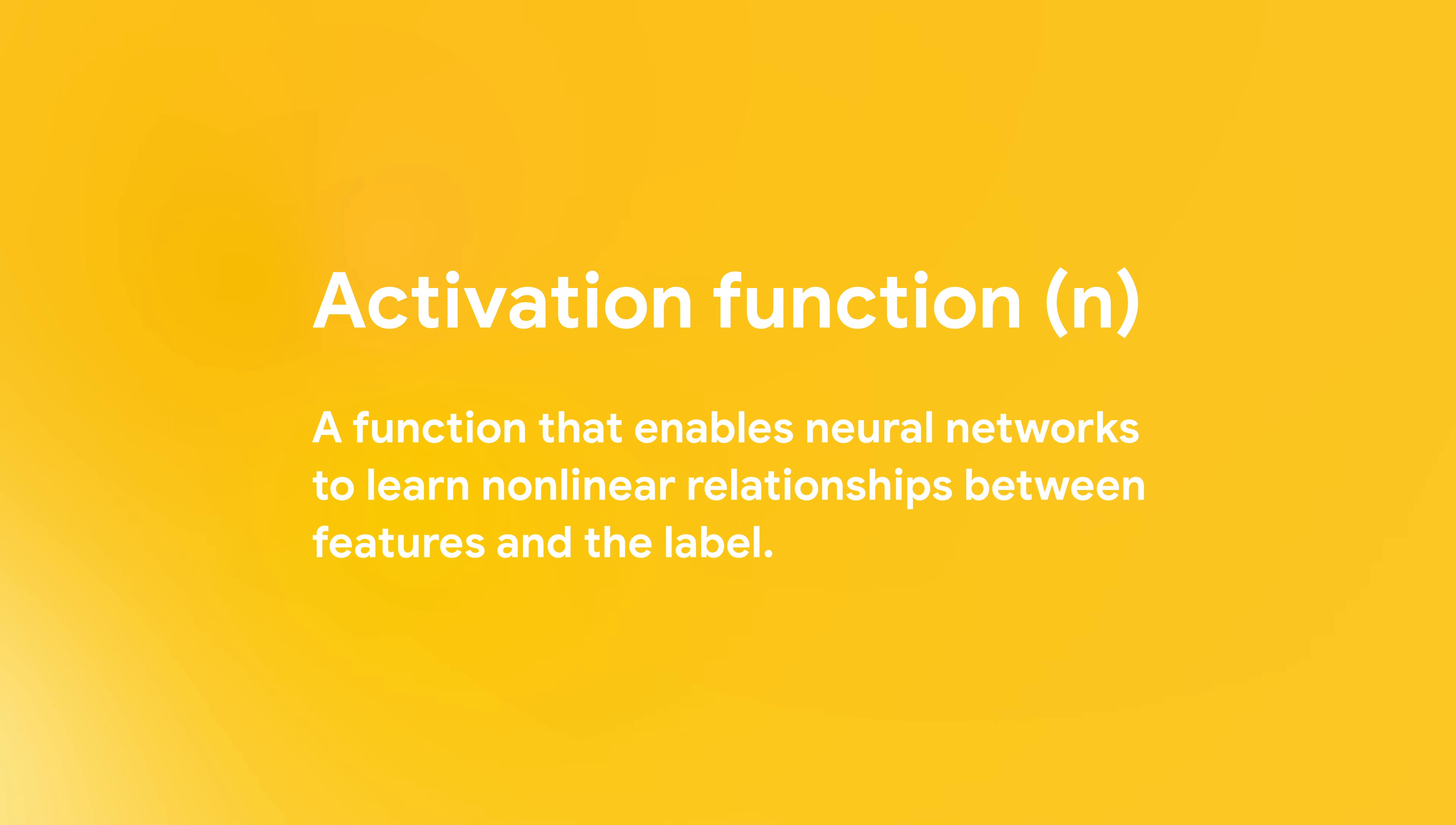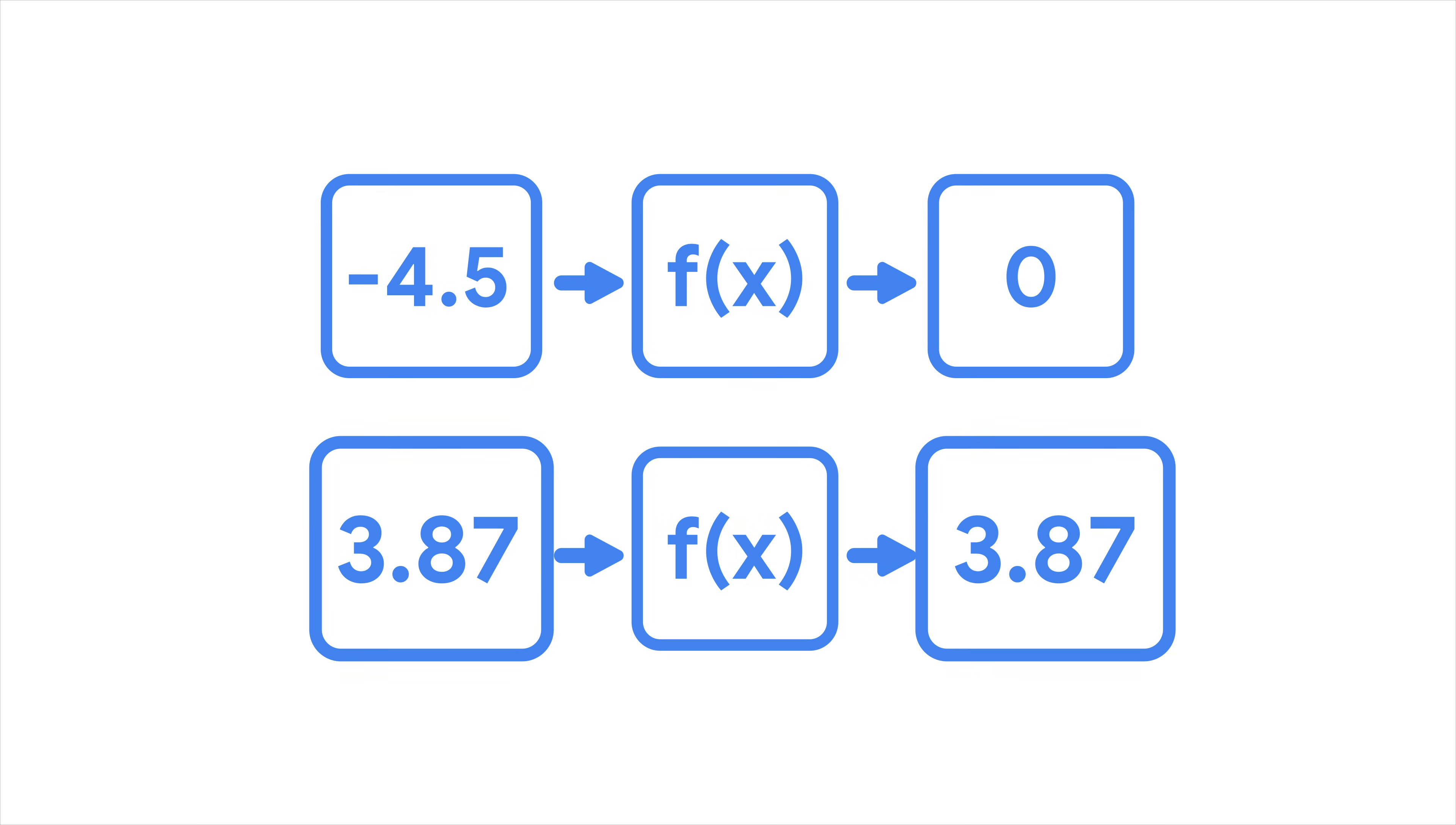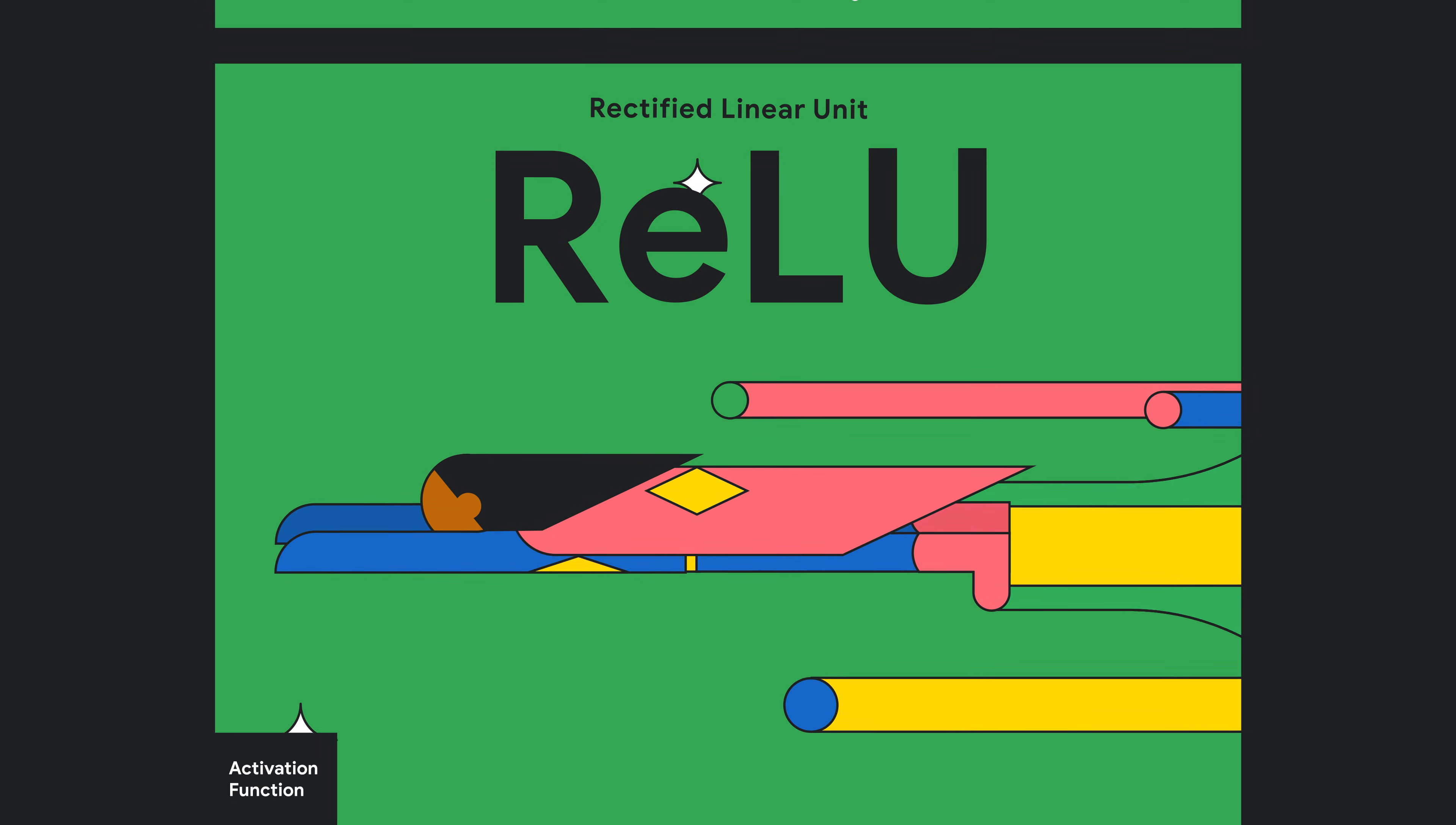For example, after calculating the output of each neural network layer, we can apply an activation function that transforms the output as follows. If the value is negative, return zero. Otherwise, return the original value. This simple function is called a rectified linear unit, or ReLU. Because this function has a nonlinear shape, inserting it into our neural network allows our model to represent nonlinear relationships.